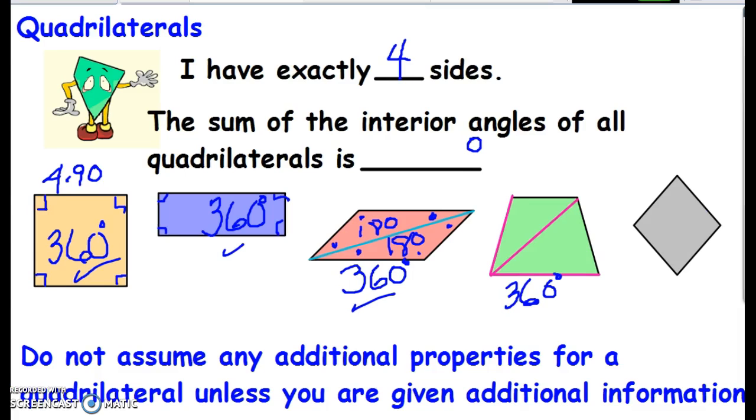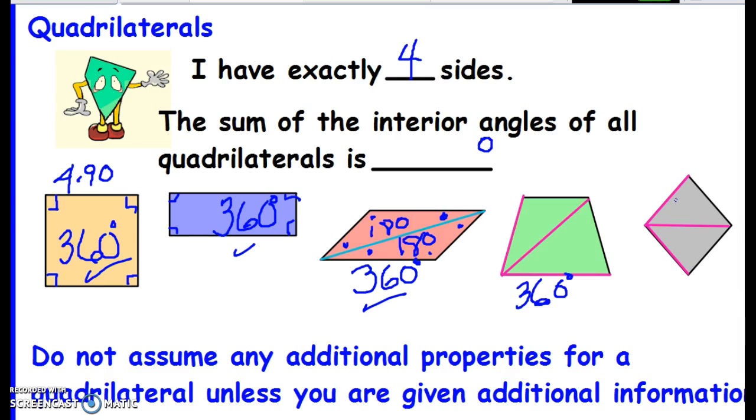And this last diamond, I can do the same thing. If I go from this vertex to all the other vertices, I still only end up with two triangles. So two triangles of 180 degrees means that any four-sided figure is going to equal 360 degrees.